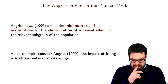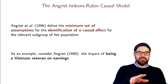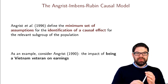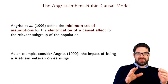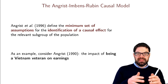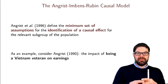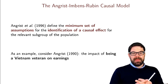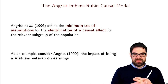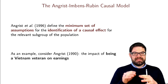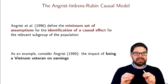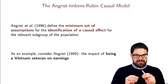If you observe someone who gets treated and was encouraged by the instrument, that's either a complier or an always-taker. It's impossible to disentangle one from the other. What I'm going to do now is walk you through the workhorse model for understanding the local average treatment effect — the Angrist-Imbens-Rubin causal model, which defines the minimum set of assumptions for identifying a causal effect.